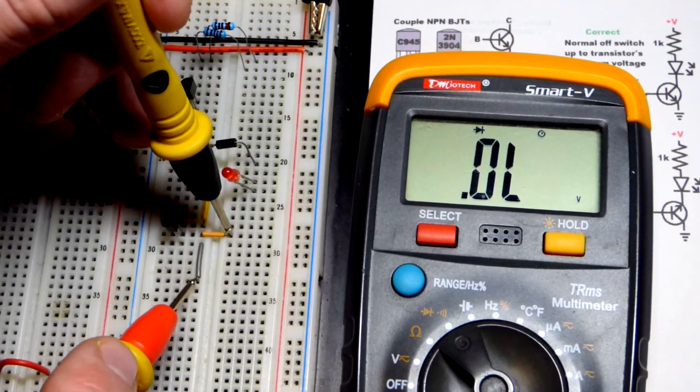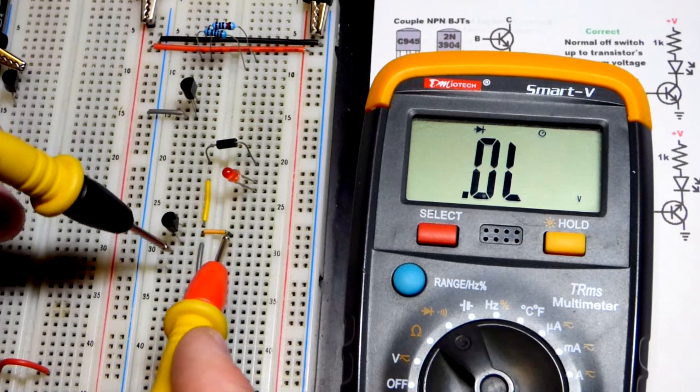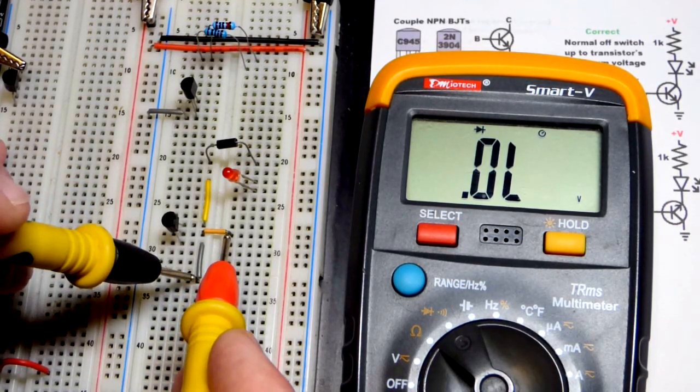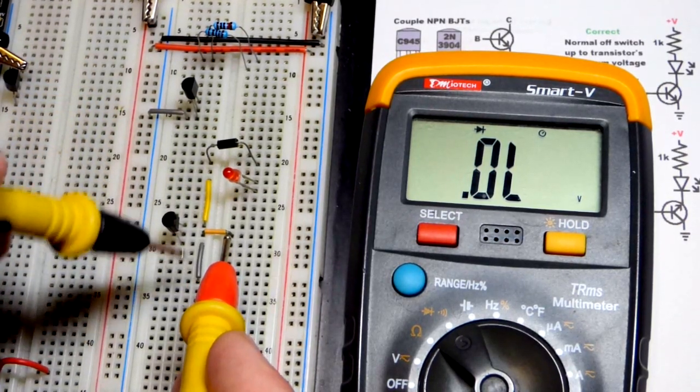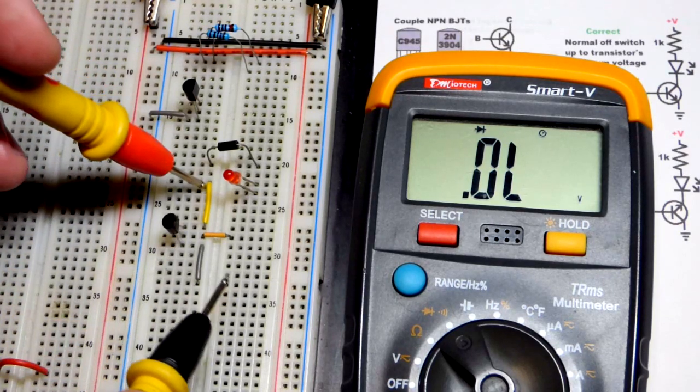So, yeah, it was the emitter at the bottom. Base at the top. That's right. So, there you can see base is definitely not the middle or the bottom here. Flat side, again, is to the right. Again, I'm not familiar with this transistor.